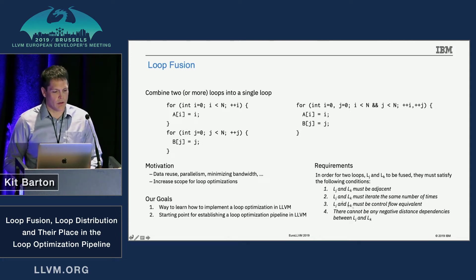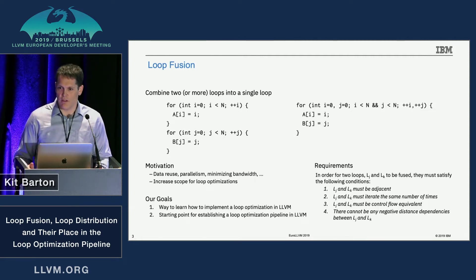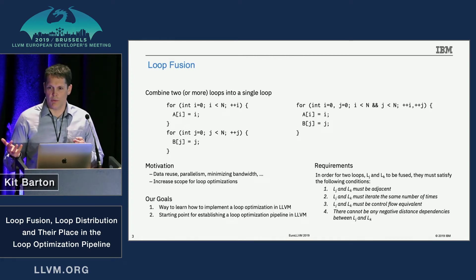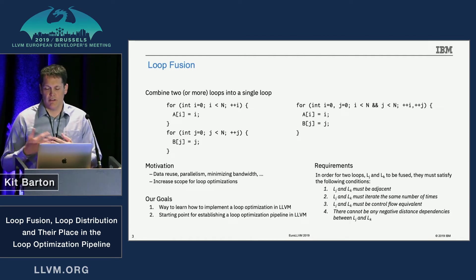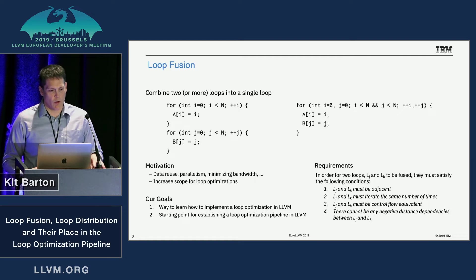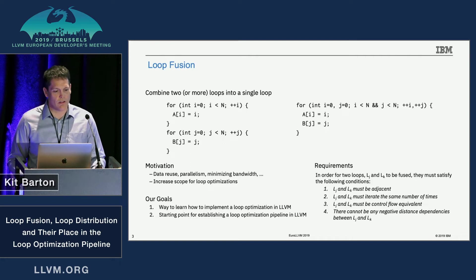If you have loop optimizations that work on a single loop nest, the more statements you can put into that nest, the more benefit you'll get. The four conditions that need to be met to fuse loops are: the loops must be adjacent with no intervening code, they must iterate the same number of times, they must be control flow equivalent, and there can't be any negative distance dependencies between them.